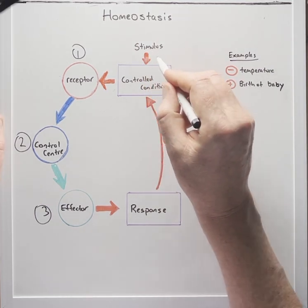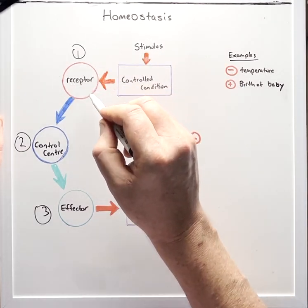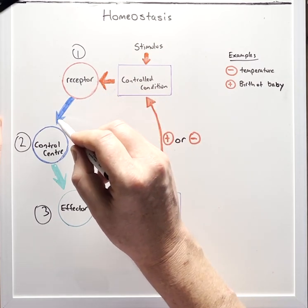So the stimulus here is a hot temperature which causes the control condition to change, heat up. This is picked up by receptors on the skin which sends a nerve signal to the brain.